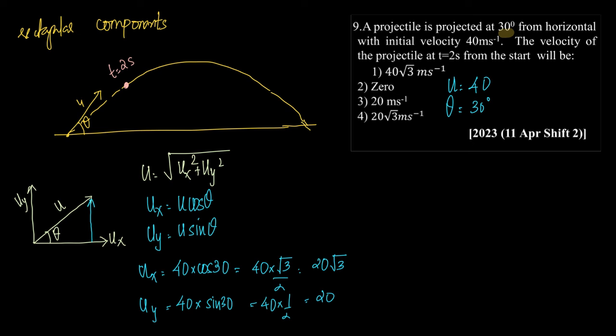So ux, let me write down these two values again. What is the value of ux? ux, we have it as 20 root 3. And what is uy? uy, we have it as 20.